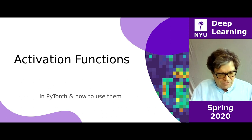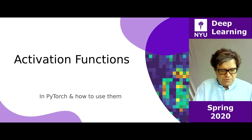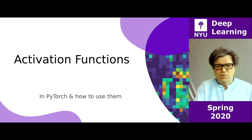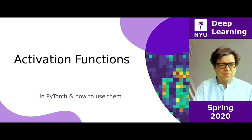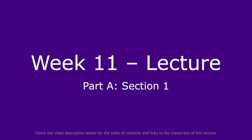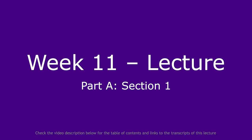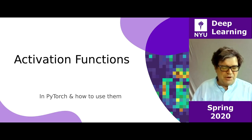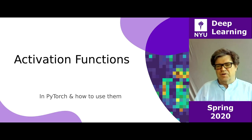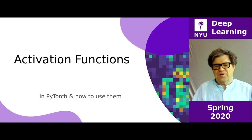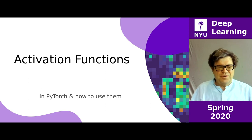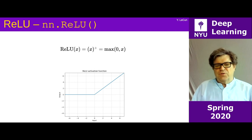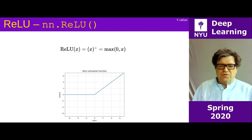We're going to talk about two or three topics today. The first is a review of activation functions that exist in PyTorch — when and how to use them. There are a whole bunch defined in PyTorch, basically coming from various papers where people claim that a particular activation function works better for their problem. Of course everybody knows ReLU — that's a very standard one.